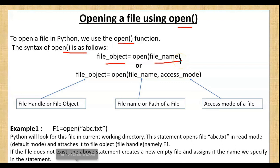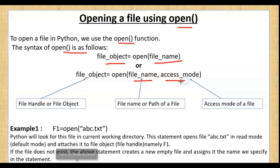By default, the file will open in read mode — you can read data from it. The second syntax is: file_object = open(file_name, access_mode). You have two parameters: the name of the file you want to open, and the access mode — the purpose for which you want to open it: read, write, or both.